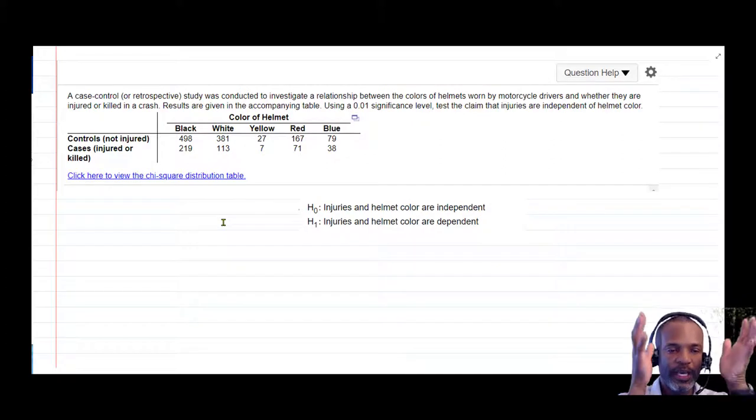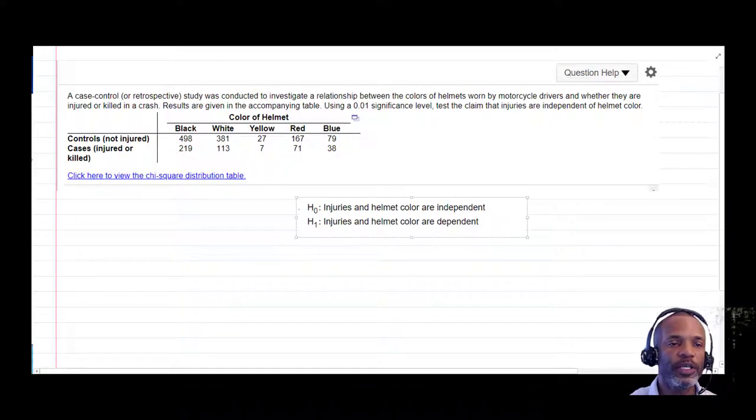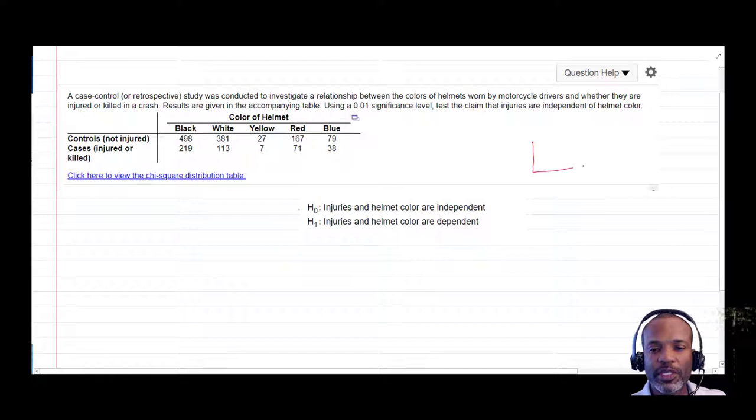Now we have a table of observed values. We're going to use our calculator to generate another table of expected values or expected counts. What is that? One, two, three, four, five.